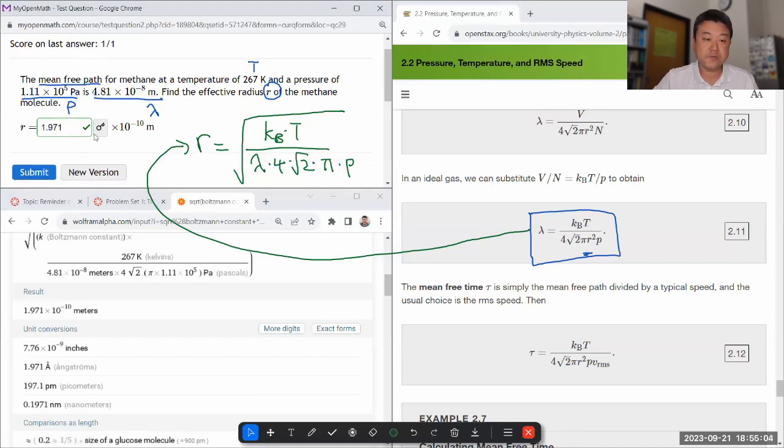I gotta be honest, I have no number sense for this mean free path. I guess the only way I might make sense of it is that's the size of an atom—that's the size of a hydrogen atom. So that's a pretty short distance. The methane would basically... sorry, this is the size of methane.